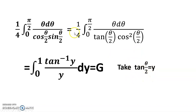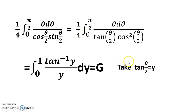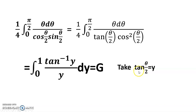We have d-theta divided by cos-squared(theta/2) equals dy, meaning d-theta equals cos-squared(theta/2) dy. Since the factor of one-half and sec-squared(theta/2) are involved, the one-quarter term is cancelled because the derivative of tan(theta/2) with respect to theta/2 equals sec-squared(theta/2), and differentiating theta/2 with respect to theta gives one-half. So the one-quarter and one-half factors cancel appropriately.